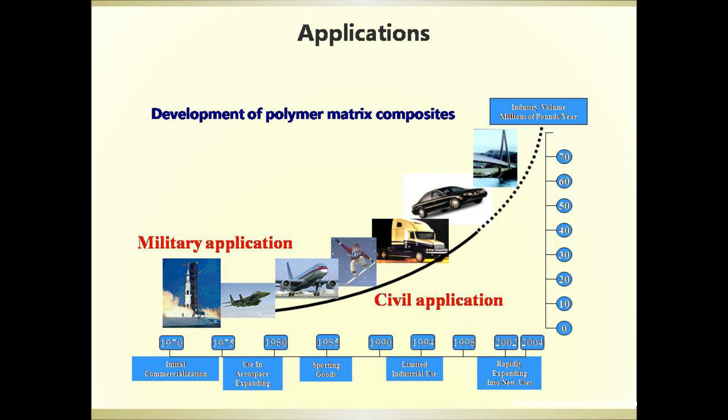In 1985, composites began to be used in sporting goods. Later, in 1994, some polymer matrix composites were used for industrial use. After 2002, polymer matrix composites were rapidly expanded to new uses. So we can see that polymer matrix composites developed from military applications to civil applications, and the industrial volume of composites gradually increased.